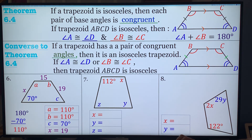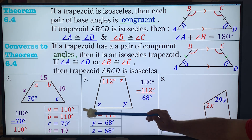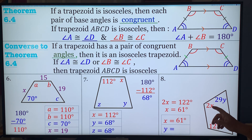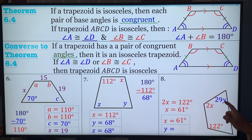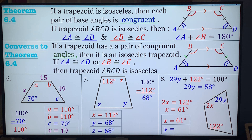For the next problem, X is congruent to the base angle, so it's 112. To find Z and Y, subtract from 180: 180 minus 112 gives you 68 and 68. For problem 8, we know 2X equals 122, so X equals 61. Then 122 plus 29Y equals 180 because they are supplementary. Subtract 122 from both sides, divide both sides by 29, and you get Y equals 2. The angle isn't 2 degrees — just Y equals 2.